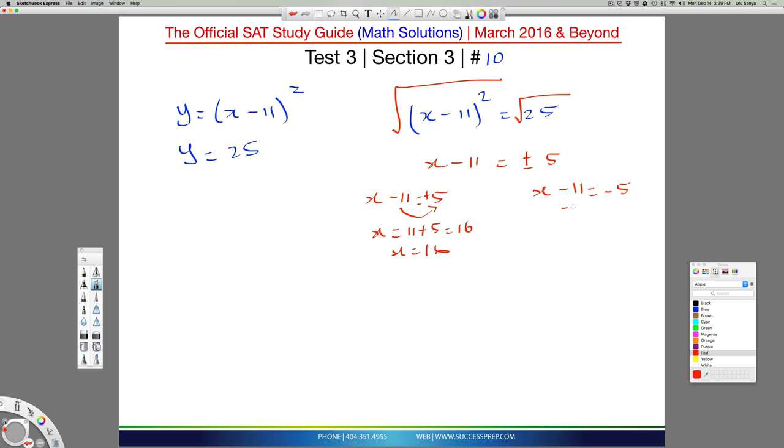And on this side, you move this over to this side as well. It becomes x equal to plus 11 minus 5, so x is equal to 6. So what we have here are two solutions for x. But the question is asking for AB, the point of intersection. So it's helpful to go ahead and graph this out and see what's really happening.